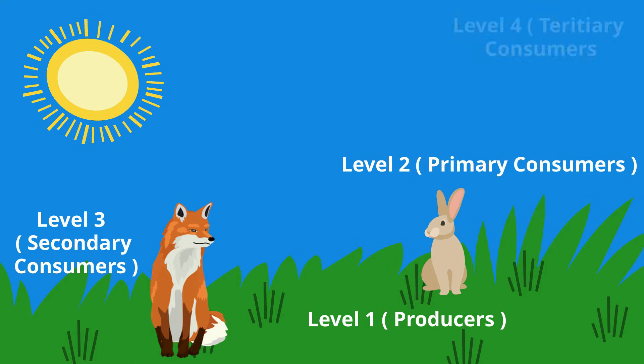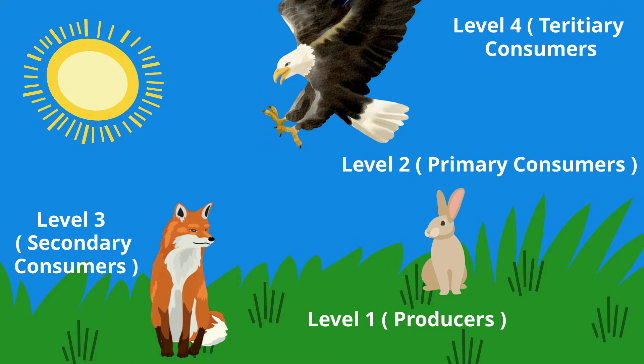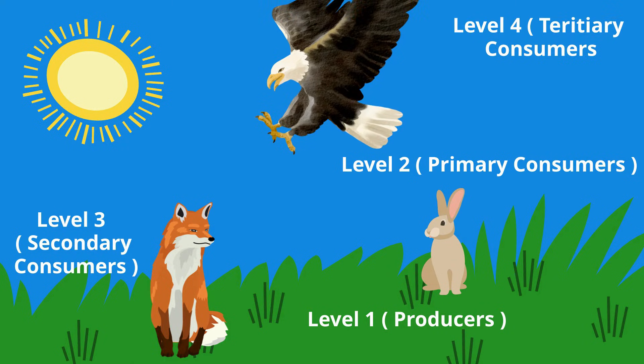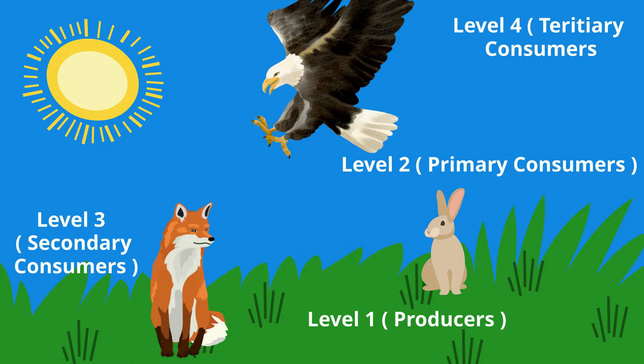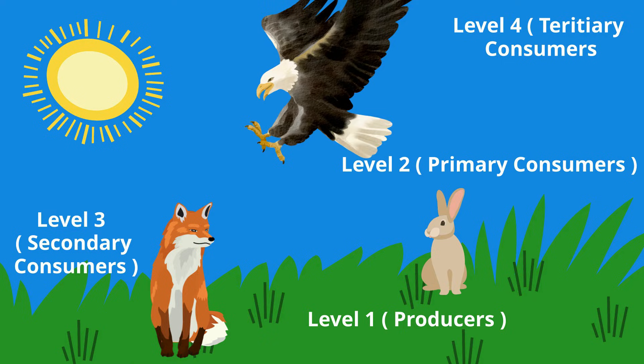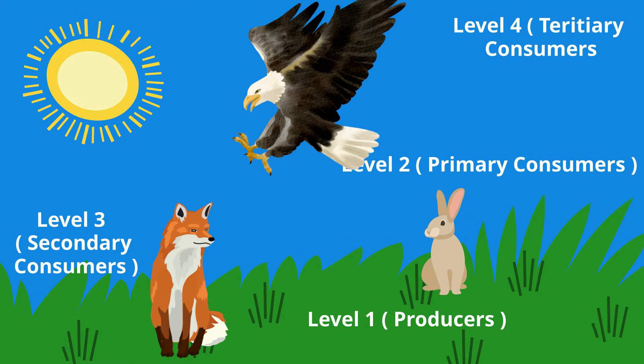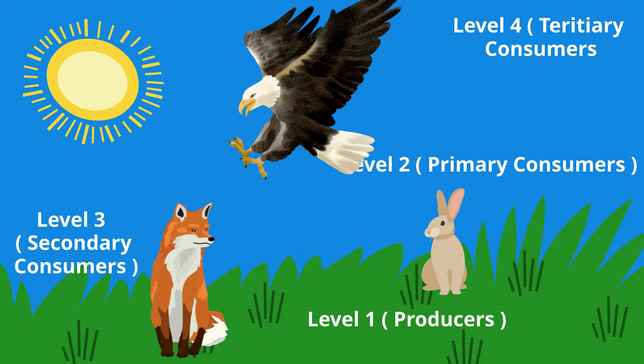Level 4 includes the tertiary consumers. The tertiary consumers eat other carnivores. For example, golden eagles eat foxes.